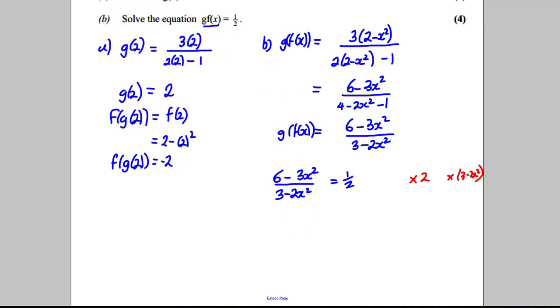What am I going to get when I'm multiplying both sides by 2? I'm going to have a 2 on this side and 6 subtract 3x squared. On this side, 2 multiplied by a half is just 1—I'm just going to have 3 subtract 2x squared like that.